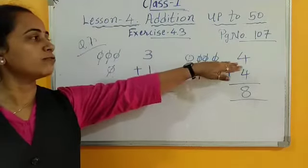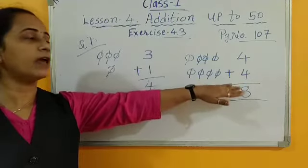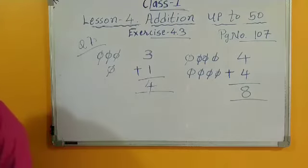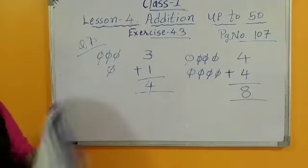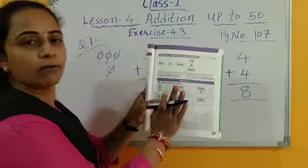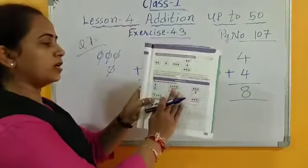In addition, the number on top, the number given below, what do you have to do? Add it. So here already given the circle, only you have to count and write your number. This is question number 1. Complete this question number 1.